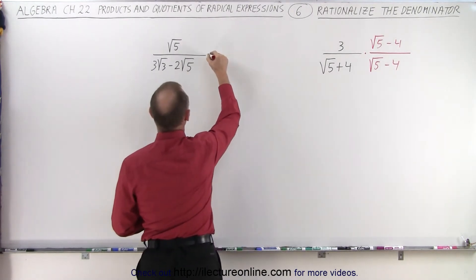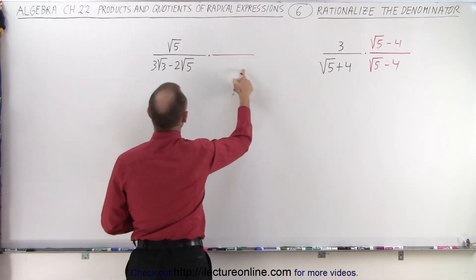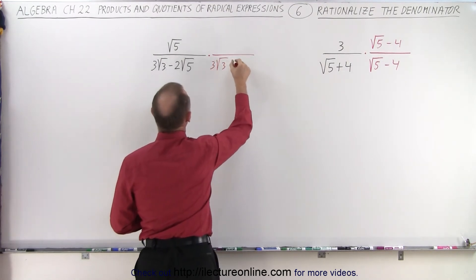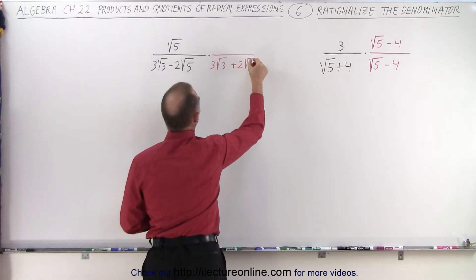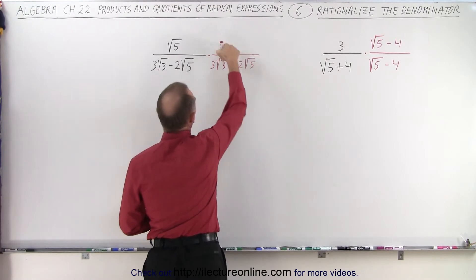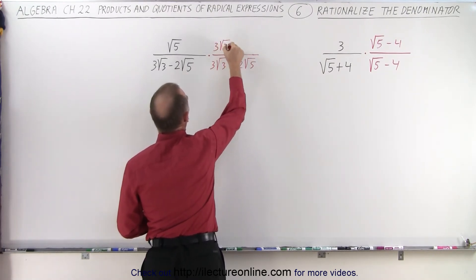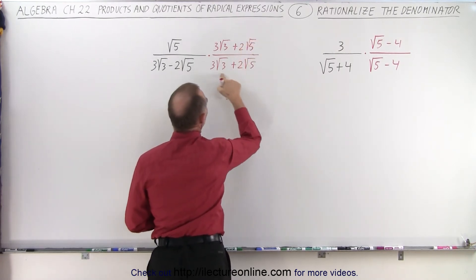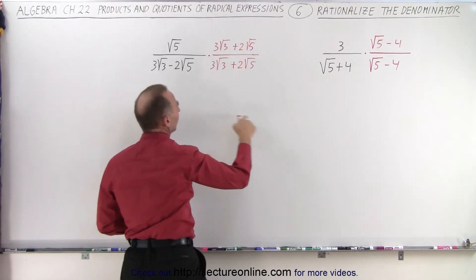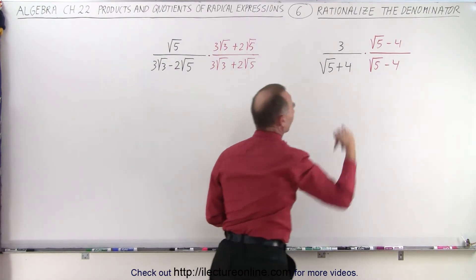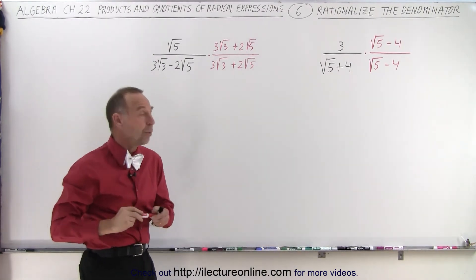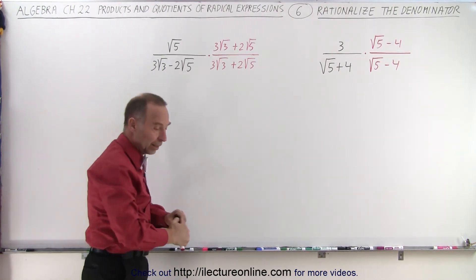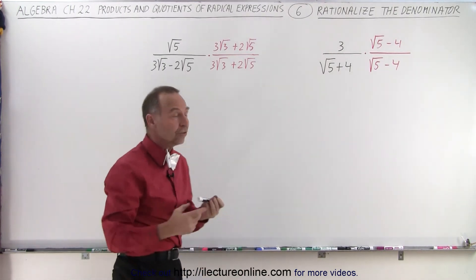The same over here — we're going to multiply this by the conjugate of the denominator. So this would be 3 times the square root of 3 plus 2 times the square root of 5. And of course, we must do exactly the same to the denominator: 3 times the square root of 3 plus 2 times the square root of 5. Notice that this is the conjugate of this, just like the other was the conjugate of that. When we multiply the denominators, that's pretty easy because we've learned how to multiply a binomial with its conjugate.